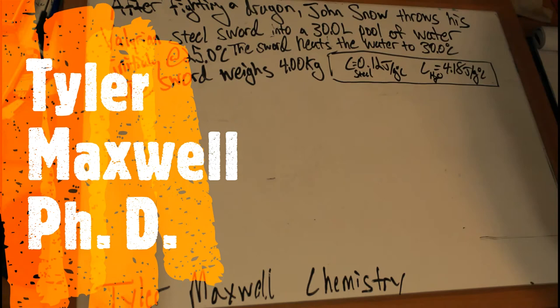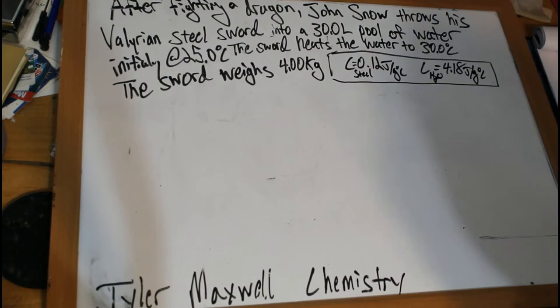Hey guys, welcome back to Tyler Maxwell's chemistry class. Today we're finishing off chapter 6, which is thermochemistry calorimetry, with my very famous, most favorite Game of Thrones calorimetry problem. Now this problem is kind of difficult but it employs all of our favorite calorimetry rules that we've learned and it shouldn't be too hard for us to solve.